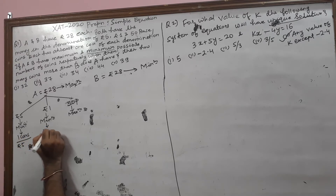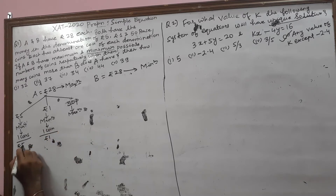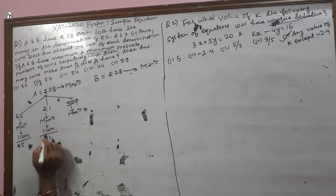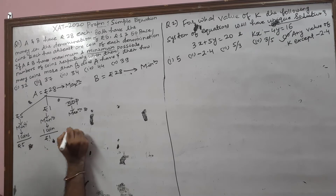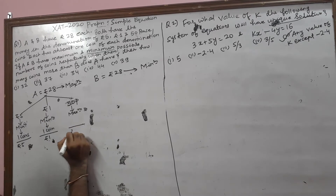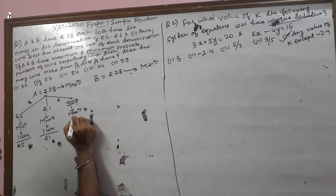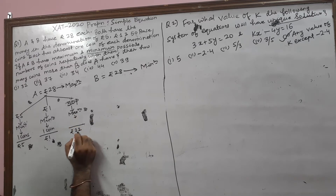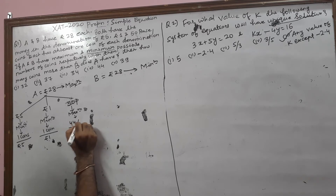Here again 1 coin of rupees 1, whose value will be rupees 1. So, 5 plus 1 is 6. And 28 minus 6 is 22. So the remaining 22 rupees contain the 50 Paise coins. 50 Paise coins totaling rupees 22, so that is 44 coins.